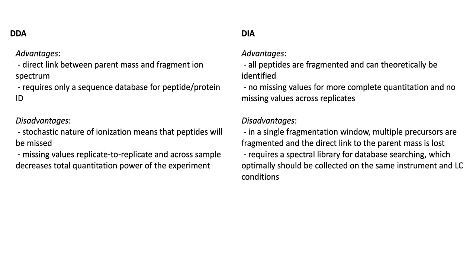Both methods have advantages and disadvantages. DDA experiments maintain the link between the parent mass and the fragment ion spectrum, and they require only a sequence database for peptide and protein identifications. However, due to the stochastic nature of ionization, some peptides will be missed. Also, missing values replicate-to-replicate and across samples will affect the ability to do good quantitation, especially across multiple experiments.